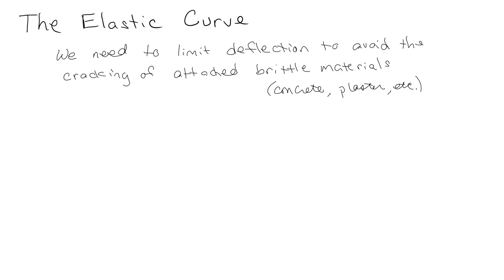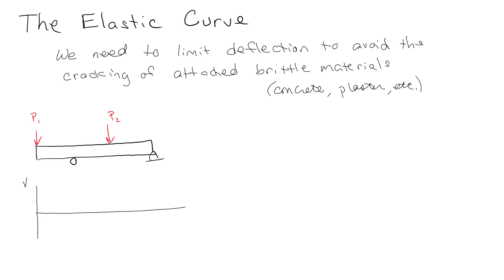We're going to look at the elastic curve and beam deflection. The idea is we want to limit how much a beam deflects, because if you've got concrete or plaster attached to it and the beam deflects too much, it's going to crack. So it helps to be able to sketch the elastic curve. To do that, we start by drawing a beam diagram, then we draw the shear and moment diagrams to go along with it.